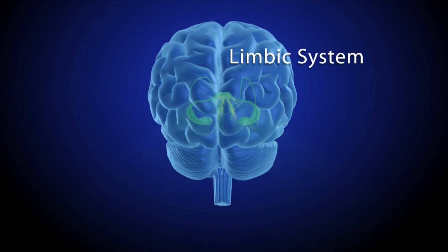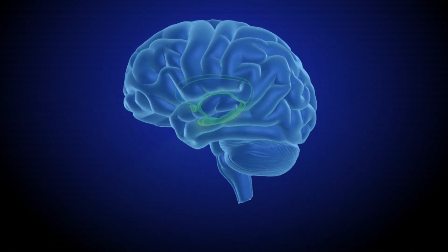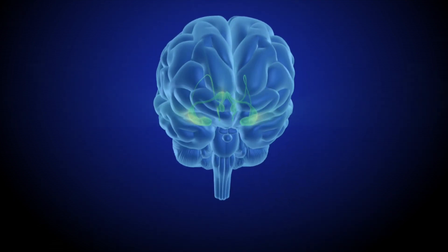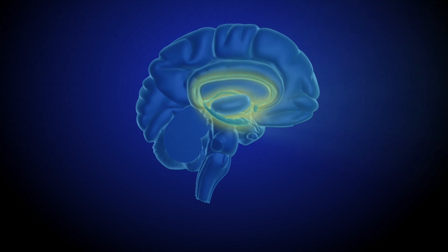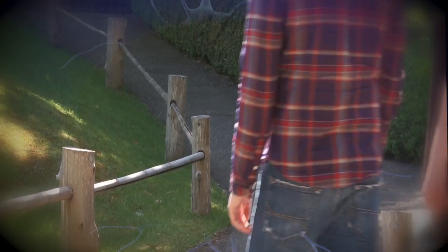Deep within the brain is a set of structures called the limbic system. The limbic system contains the brain's reward circuit or pathway. The reward circuit links together a number of brain structures that control and regulate our ability to feel pleasure.